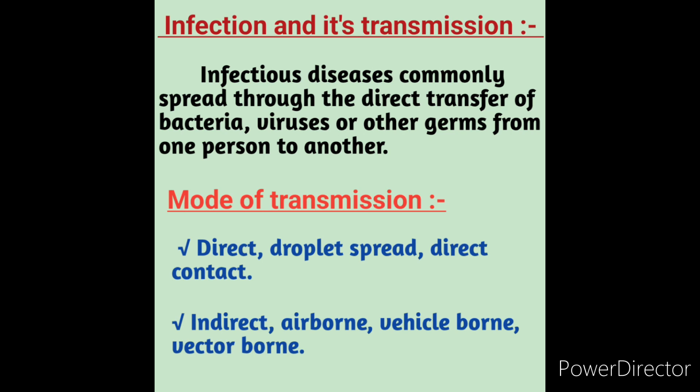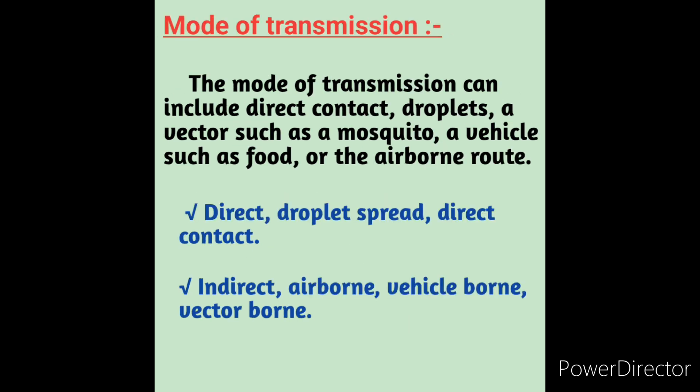The mode of transmission includes: direct transmission or direct contact with an infected person, droplet spread, direct and indirect contact, airborne, vehicle-borne, and vector-borne. The mode of transmission can include direct contact, droplet, a vector such as a mosquito, a vehicle such as food, or an airborne route. Related to the mode of transmission, we will also get FAQs and questions in further classes.